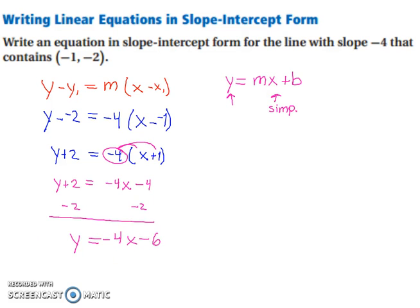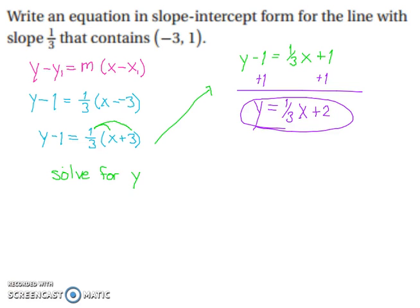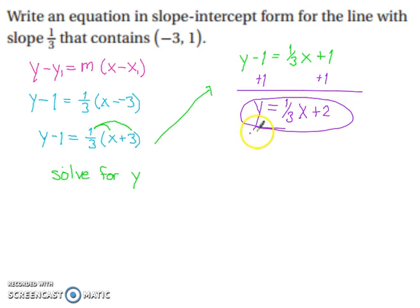Pause the video and try the next one on your own. When you return, an answer will be revealed. Start with point slope form, plug everything in, solve for y, and simplify the right-hand side. The answer is y equals 1/3 x plus 2.